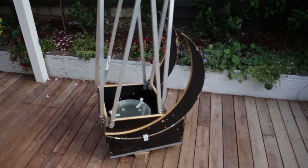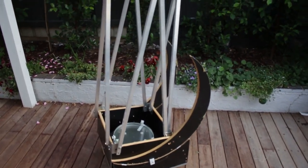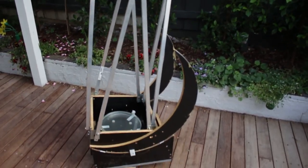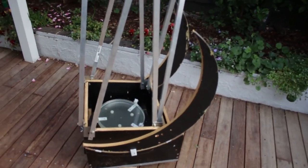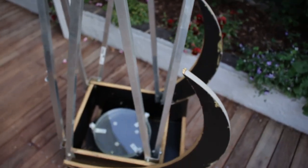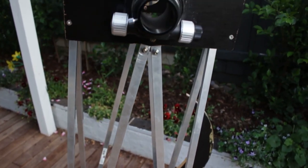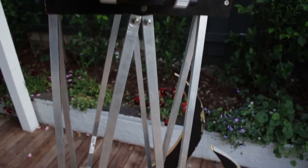So this is my 10 inch F5 DIY telescope. I made just about everything on this telescope, including the main primary mirror. In fact, there are only two things I did not make. So far I'm really happy with the way it works. Let's get into how I actually made this thing.